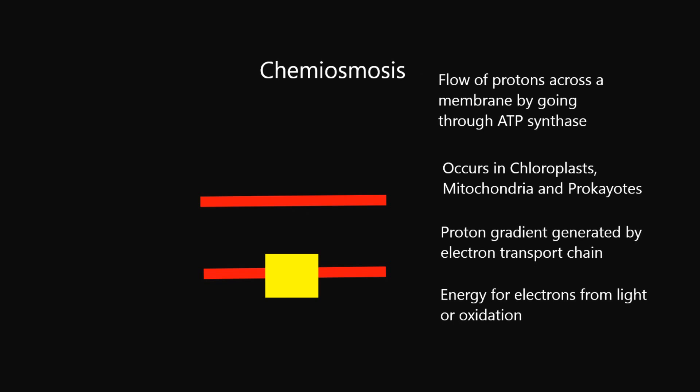Chemiosmosis relies on a proton gradient, a gradient of hydrogen ions generated by an electron transport chain on a membrane. The energy for the electrons moved in the electron transport chain either comes from capturing of light in chloroplasts or from oxidation in mitochondria.